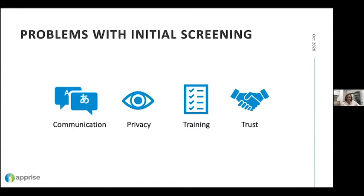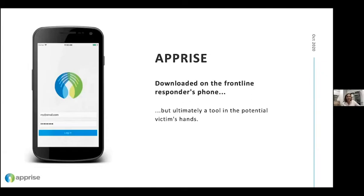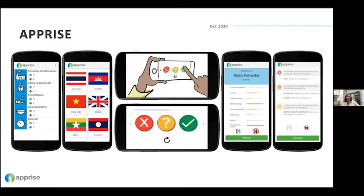Based on this, we developed a system called Apprise. Apprise is a mobile app downloaded onto the frontline responder's phone, but ultimately used as a tool in the potential victim's hands. We targeted the frontline responder's phone because our stakeholder consultations revealed they were the ones who always had access to technology — if you were being exploited, often your ability to call for help would be taken away.